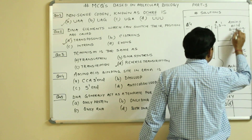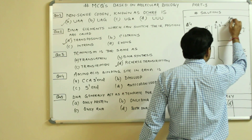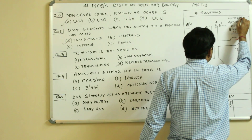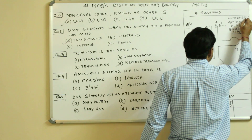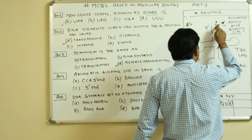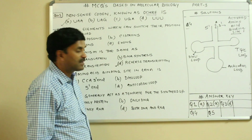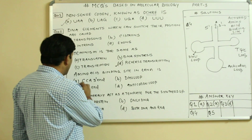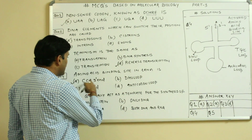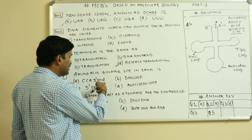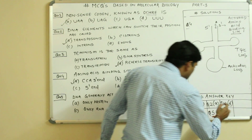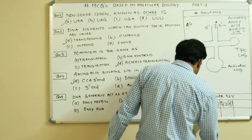The activated amino acid will come and attach at the 3'-end having the CCA sequence. So the amino acid binding site in tRNA is the CCA 3'-end. Question number four is having the answer A.